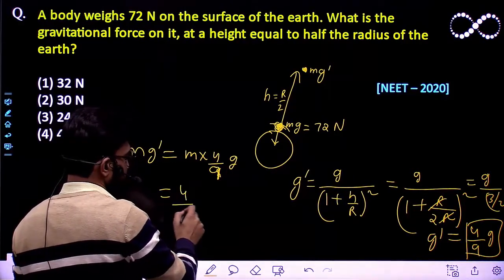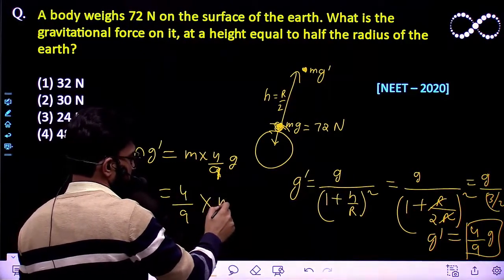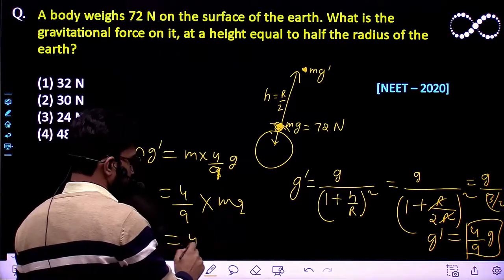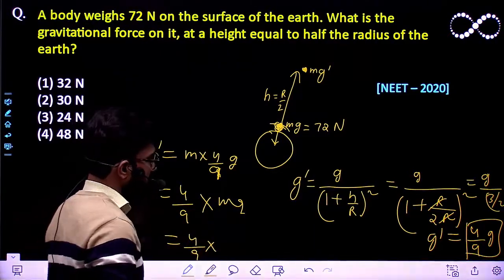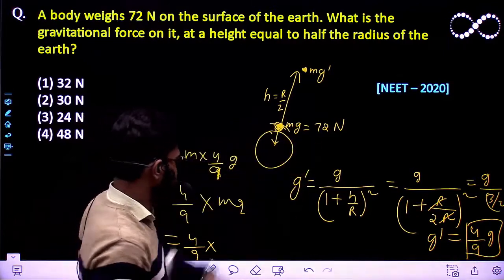So that means 4 by 9 times of mg. This is nothing but 4 by 9 times of weight on the surface of earth, which is 72 Newton.